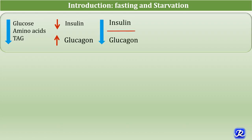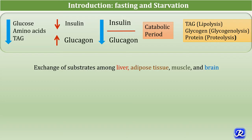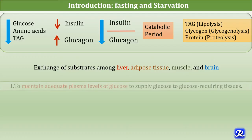The decrease in insulin-to-glucagon ratio and decreased availability of circulating substances make the period of nutrient deprivation a catabolic period, which is characterized by lipolysis, glycogenolysis, and proteolysis. This leads to exchange of substrates among various organs like liver, adipose tissue, muscle, and brain, with two priorities.